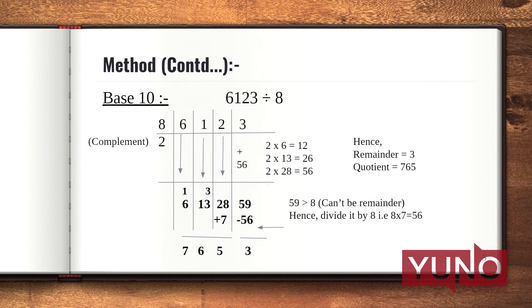The next example here is we are dividing 6123 by 8. The first step is dividing the digits with equal number of zeros. I have divided here and written the complement of the divisor, which is 2. Repeating the steps, copying down 6 as it is, 6 multiplied by 2 is 12, added with 1 gives me 13. Then again, 13 multiplied by 2 is 26, added with 2 is 28. Now 28 multiplied by 2 is 56, added with 3 is 59.